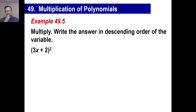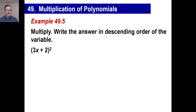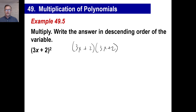Now let's try this one. When you see something like this, you're going to need to write it twice. The definition of squaring something means something multiplied by itself. So anytime you see something like this, just rewrite it: 3x plus 2 times 3x plus 2. Once you have that, you're in good shape. Go ahead and pause it and see what you get.